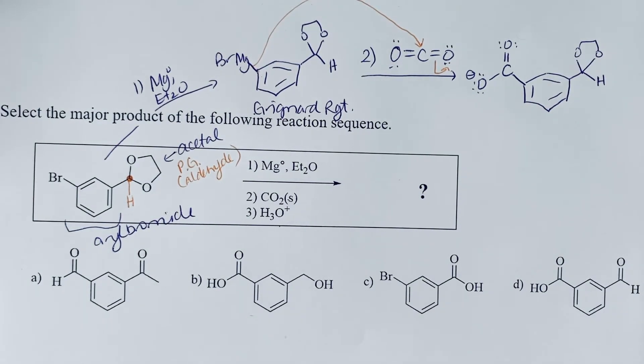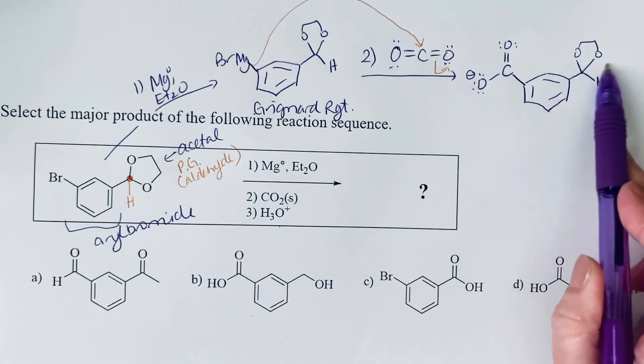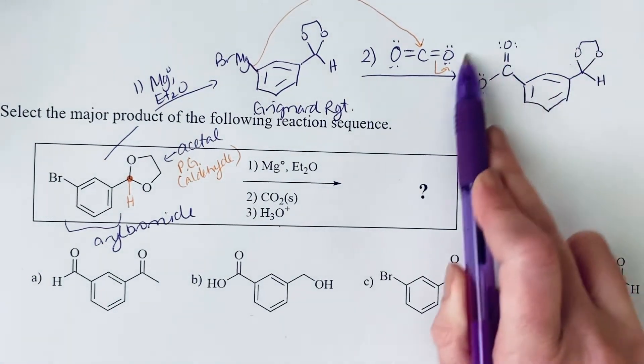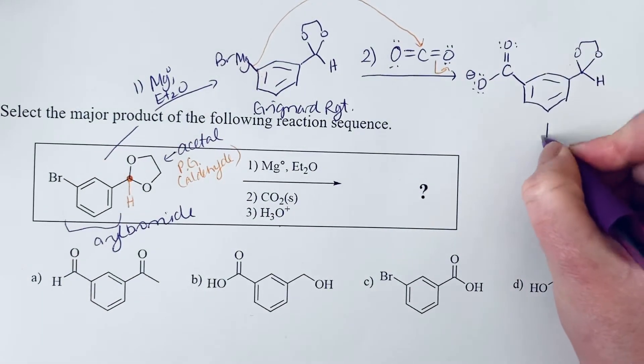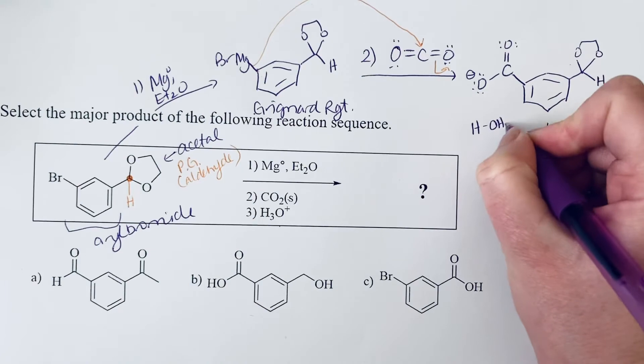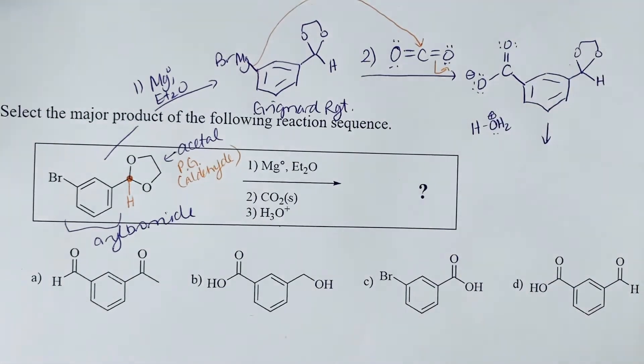And I better put the hydrogen back on there or else I will have inadvertently turned that into a carbon. And then in the final step is a hydrolysis. So we are going to hydrolyze this as well as protonate the carboxylic acid. So I'll show the protonation step first. And then we'll take a look at the hydrolysis.